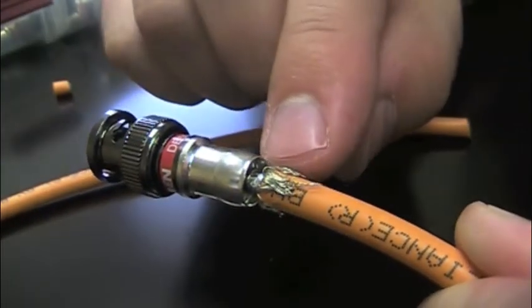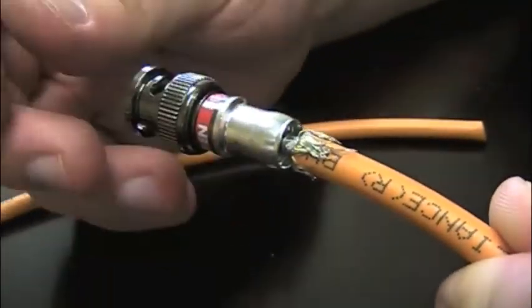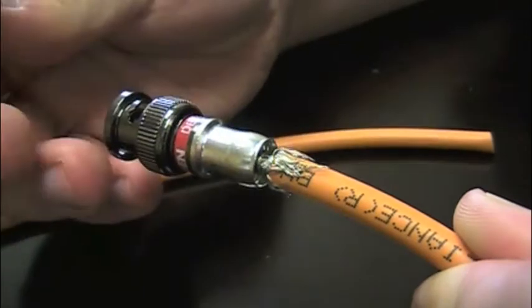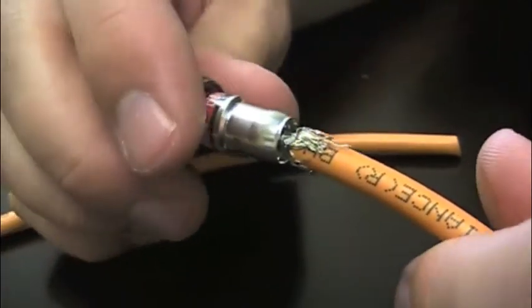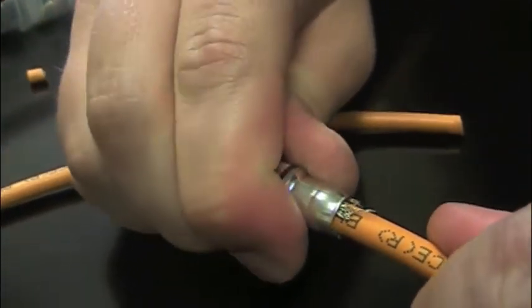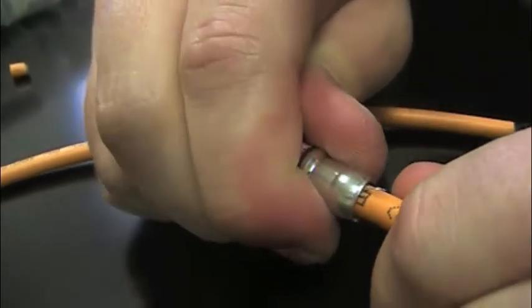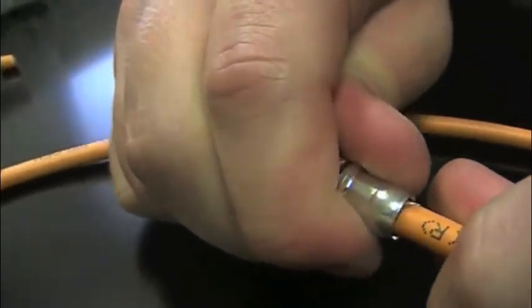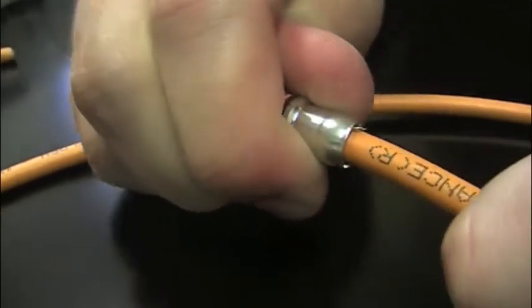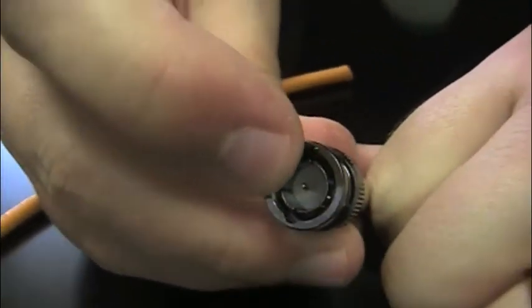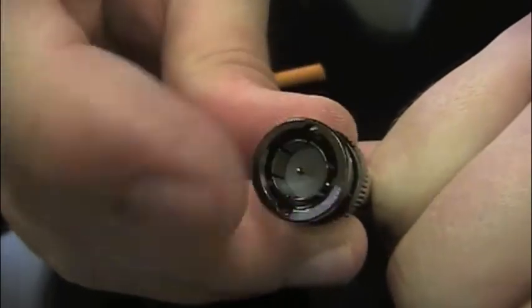You see there, there's no foil bunching. You're getting a nice, good, solid, firm connection on there. You can feel it. And then you'll continue to push it the rest of the way right over that braid. And you'll actually feel a click when you get it pushed on there when the center conductor slides all the way forward and locks into place. And there it is right there.